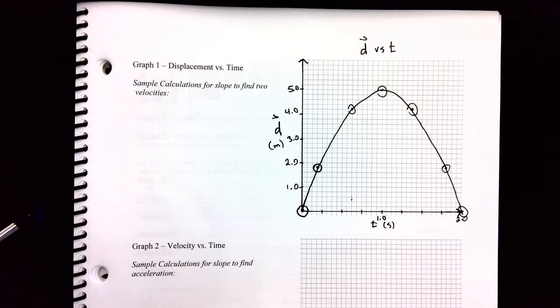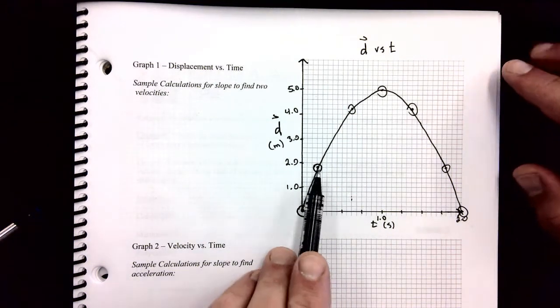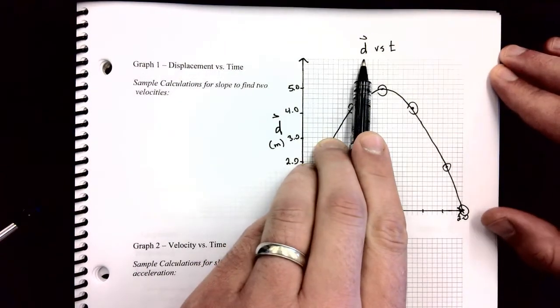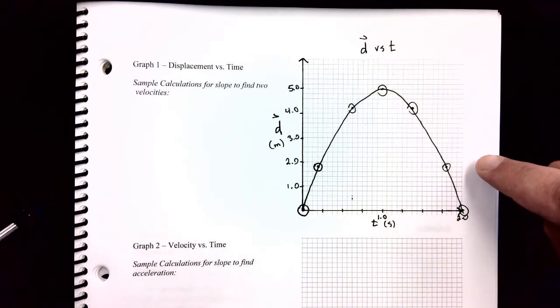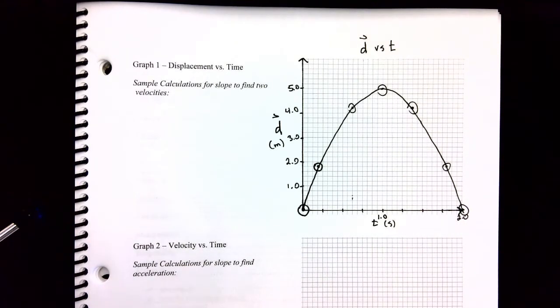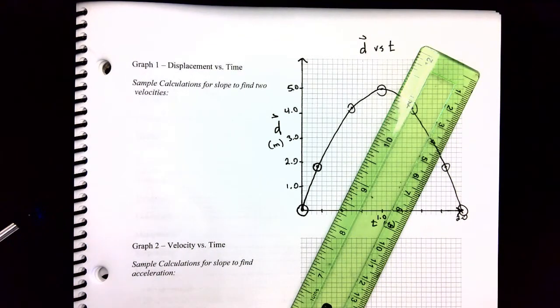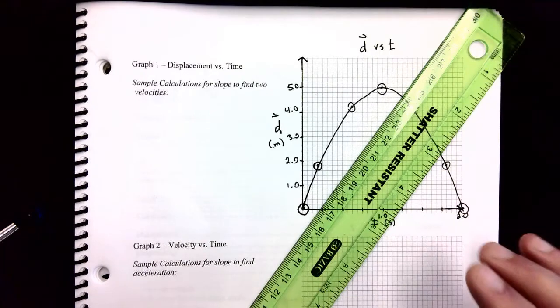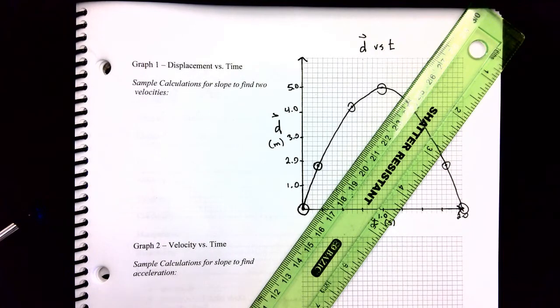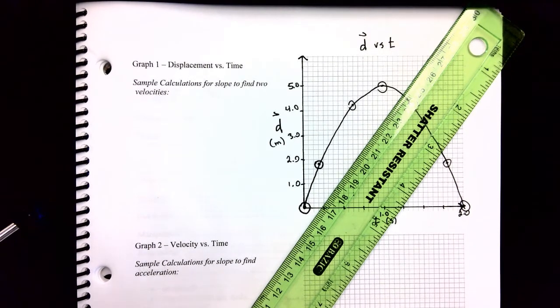Alright, we're going to see if we can take this displacement time graph and work out what the velocity time graph, which corresponds to this graph, looks like. To do that, we're going to use the idea of tangents. A tangent is a straight line, so we're going to use a ruler to draw it, which touches the graph at only one point. And the slope of that tangent line that we draw will be the velocity at the point where the tangent's touching the graph. And I think that's one of those things where you hear it said, it doesn't make a whole lot of sense, but when you see it in action, it's actually pretty sensible.